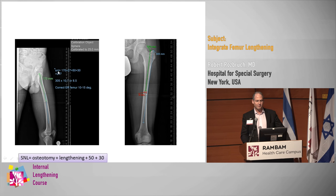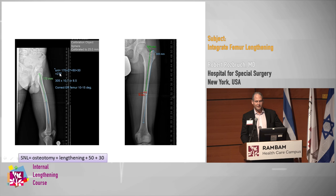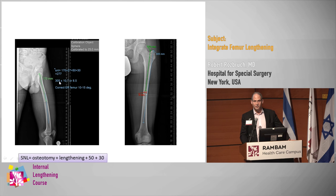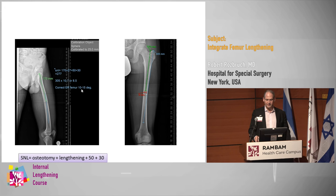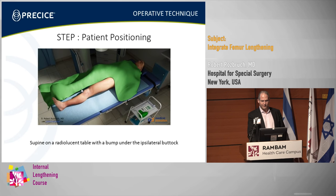In this case, SNL equals the osteotomy 170, plus 27, plus 50, plus 30 — equaling 277. Based on that I say I'm going to put in a 305. You can always put in a longer nail, not a shorter nail. Then I picked a 10.7 or an 8.5 diameter. I also made a note to myself that I wanted to correct some rotational deformity at the same time as the surgery.